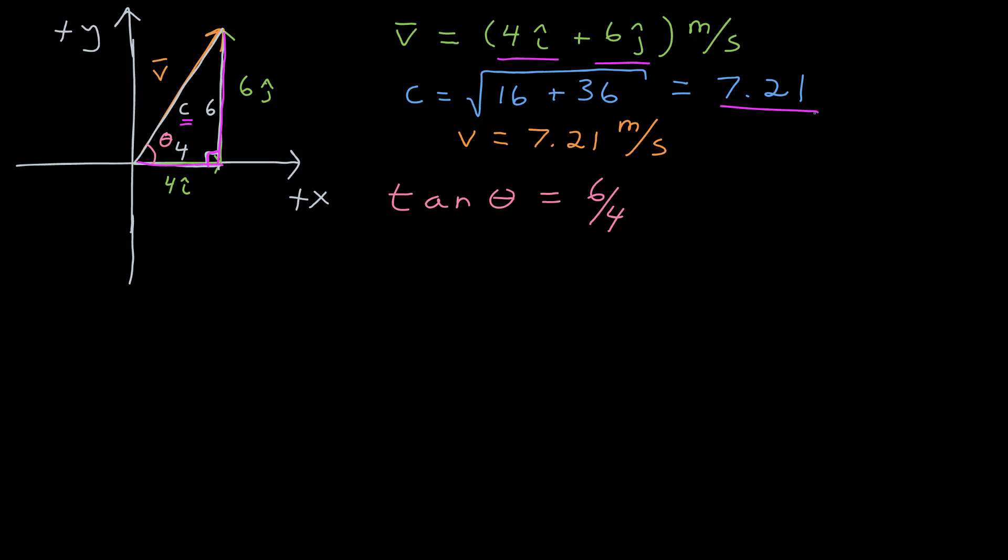Again, using basic trigonometry, I know that the tangent of that angle theta is the opposite over the adjacent, which is 6 fourths. Plugging that into my calculator, that tells me the angle theta is 56.3 degrees. That's not the final answer, but I can use that to come up with a descriptive form of that vector, which is 7.21 meters per second magnitude, and then a 56.3 degrees counterclockwise from the positive x-axis.